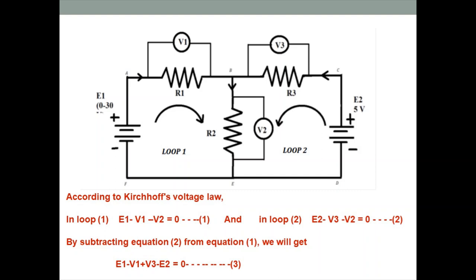This third equation is for the overall loop. If we remove the R2 resistance branch from the circuit, the equation for the overall loop that forms is: E1 − V1 + V3 − E2 = 0. All three equations must be satisfied. If they are satisfied, Kirchhoff's Voltage Law is proved.